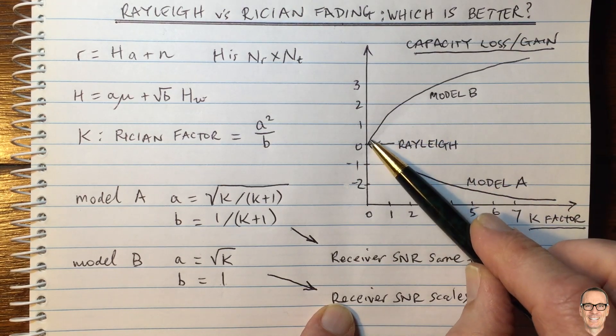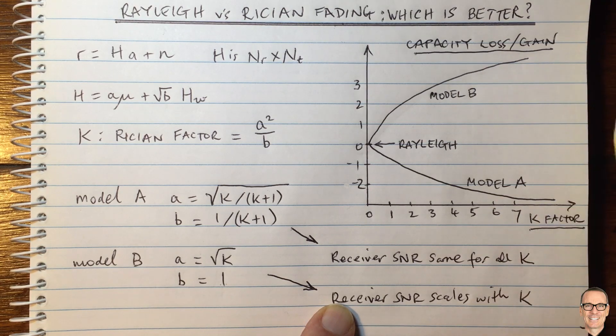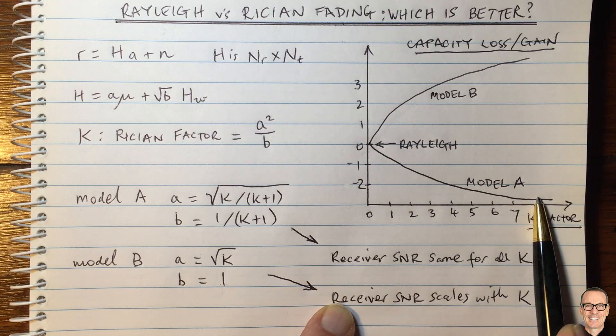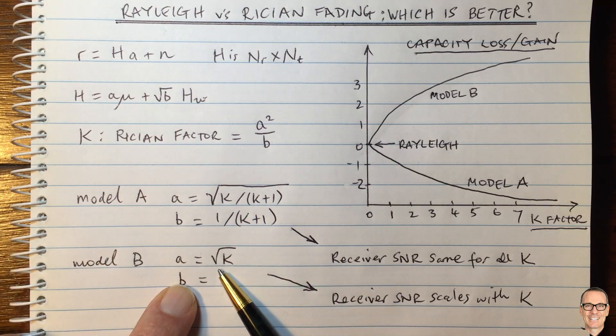So if you're looking at model B, you'd be thinking that the Ricean fading is giving you an advantage over Rayleigh. If you're looking at model A, you would be thinking that the Ricean factor is giving you a disadvantage compared to Rayleigh. Really, it all comes down to the scaling of the power.